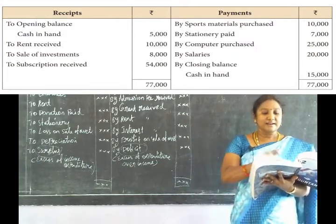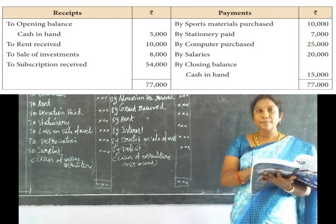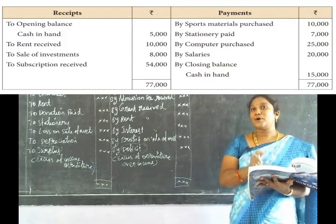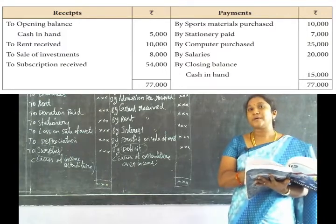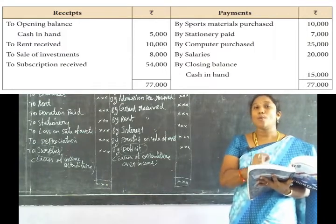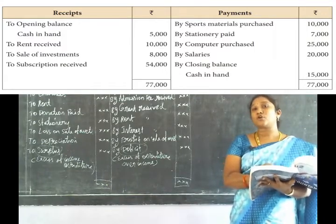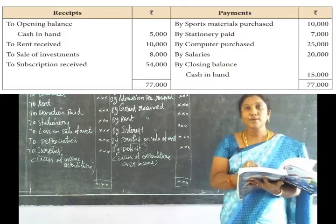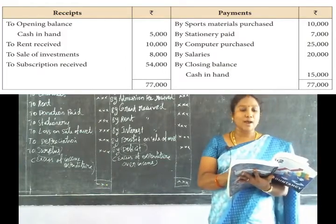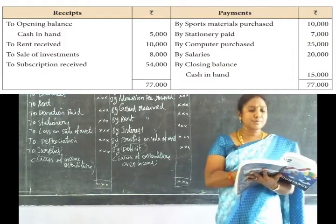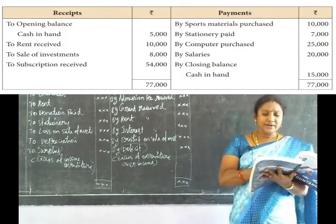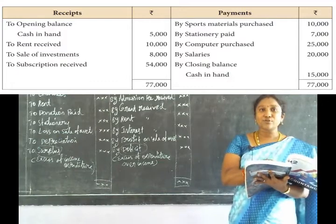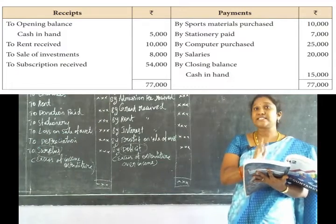Now we set up the opening balance and closing balance. We identify the income and the expenditure. We calculate the opening value and closing value. Other items include rent received.